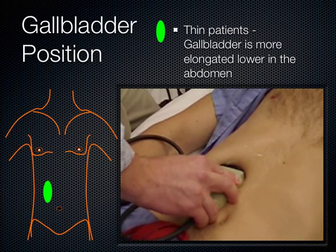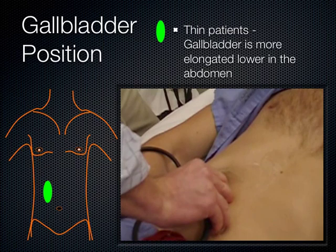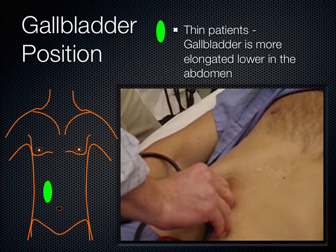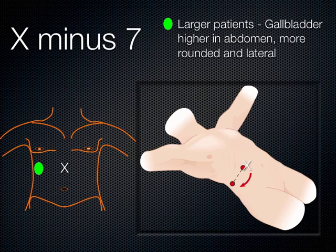The probe is flattened out as much as you can and you fan through the gallbladder anterior to posterior as you work your way laterally. In a thin patient the gallbladder is found in one area, but in a larger patient you'll find the gallbladder is a little higher in the abdomen, more rounded, more lateral. Sometimes the only way to see it in a larger patient is to go X minus 7 — where X stands for the xiphoid process and 7 is the number of centimeters you drag the probe laterally to the patient's right.